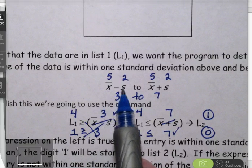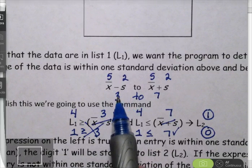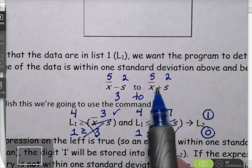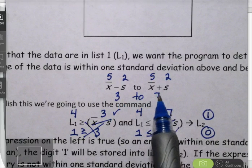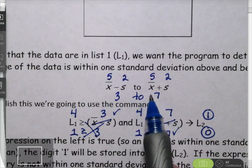Let's pretend we have a data set whose mean is 5 and whose standard deviation is 2. So one standard deviation below the mean, 5 minus 2, is 3. One standard deviation above the mean, 5 plus 2, would be 7.